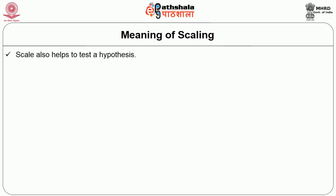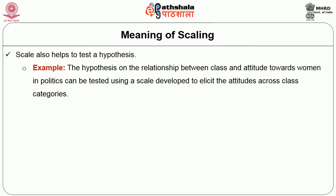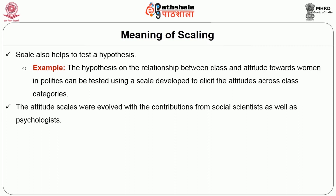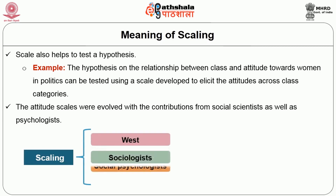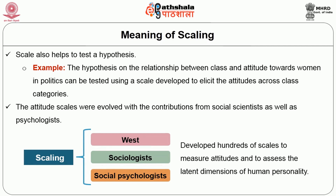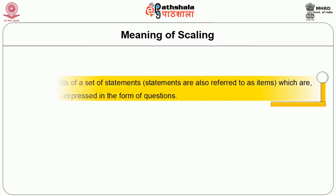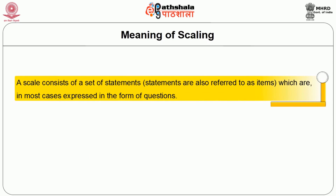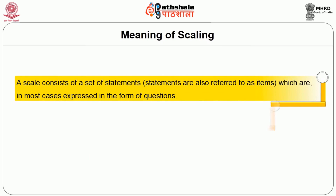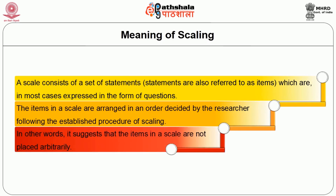Scale also helps to test a hypothesis. For example, the hypothesis on the relationship between class and attitude towards women in politics can be tested using a scale developed to elicit attitudes across class categories. Over a period, attitude scales were evolved with contributions from social scientists and psychologists. Since scaling was applied in the 1930s in the West, sociologists and social psychologists have developed hundreds of scales. A scale consists of a set of statements, and the items in a scale are arranged in an order following the established procedure — they are not placed arbitrarily.